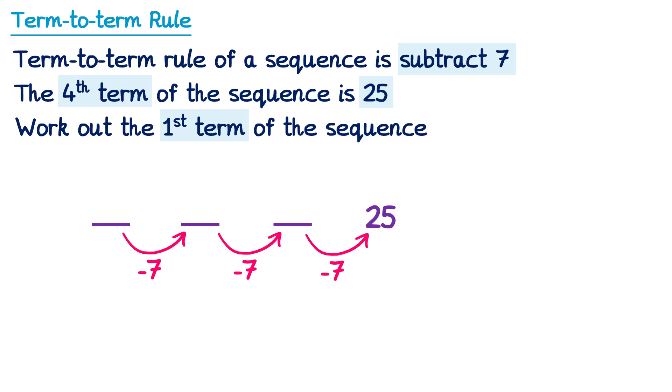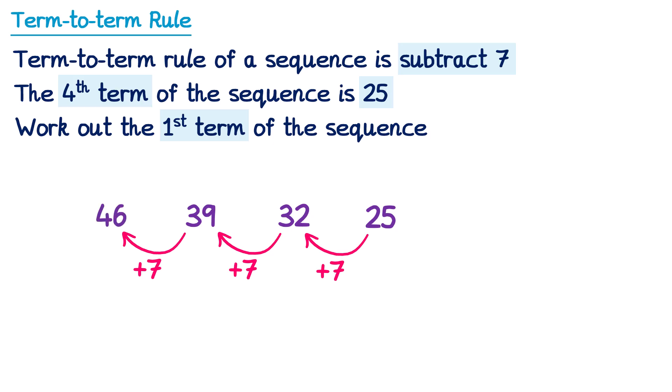But I'm going to need to work backwards to work out the first term in this sequence. So instead, we're going to go in this direction. If we ever go in the opposite direction, we need to use the inverse operation. So instead of subtracting 7, we're going to add 7, since we're going the opposite way. So we'll start at 25 and add 7, which gives you 32. 32 add 7 is 39, and 39 add 7 is 46. So we've now found the first term of the sequence. The answer is 46.